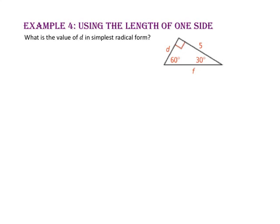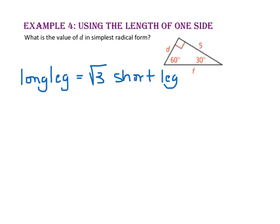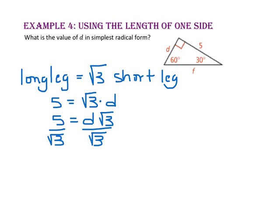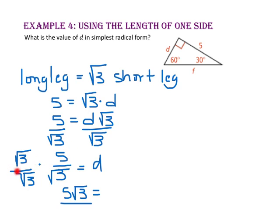In example 4, we will use the length of one side. What is the value of d in simplest radical form? Since d is the length of the shorter leg and we know the length of the longer leg, we use the relationship: the longer leg equals the square root of 3 times the shorter leg. Since 5 is the longer leg and d is the shorter leg, we get 5 equals d times the square root of 3. Dividing both sides by the square root of 3 gives d equals 5 over the square root of 3. Rationalizing by multiplying by the square root of 3 over the square root of 3: the numerator becomes 5 radical 3, and the denominator becomes 3, so d equals 5 times the square root of 3 over 3.